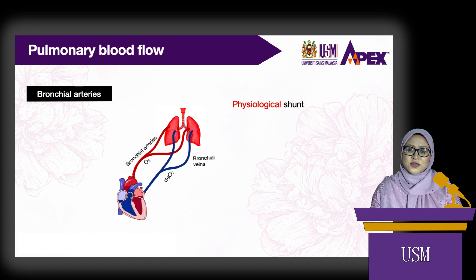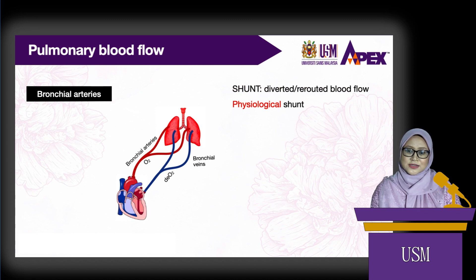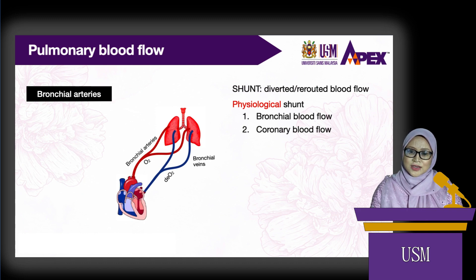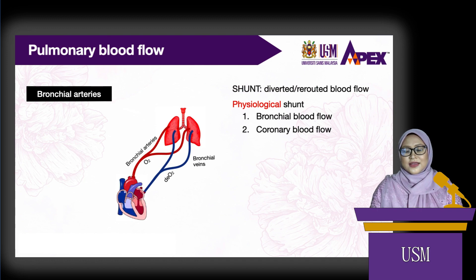A shunt refers to a portion of the cardiac output or blood flow that is diverted or re-routed. Another example of physiological shunt is the coronary blood flow that drains directly into the left ventricle through the Thebesian veins and never perfuses the lungs. This right-to-left physiological shunt accounts for about 2% of cardiac output and is always present.